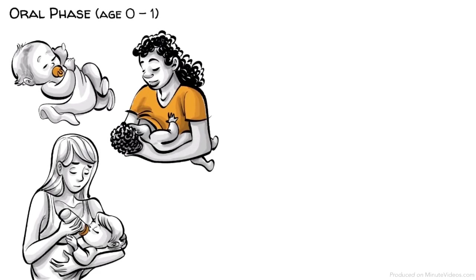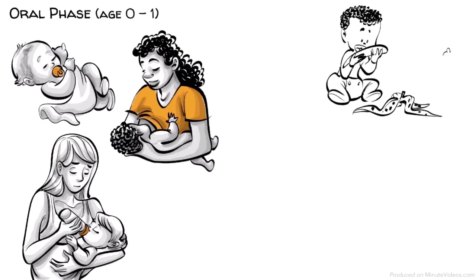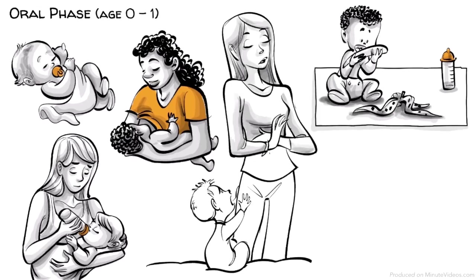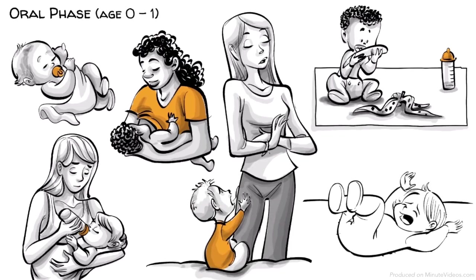The conflict that occurs now is the weaning from our primary caregiver. Hans is weaned off his mother's breast without trauma. Ernst's mother stops feeding him within four months of birth, which is too early. Ida is often left alone crying when she is hungry.